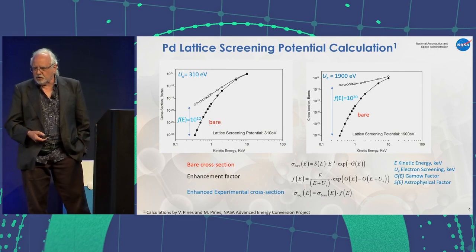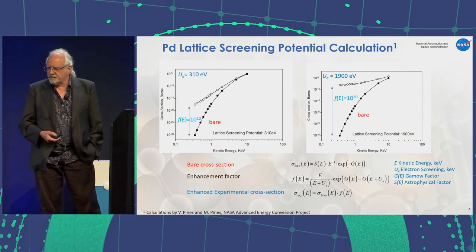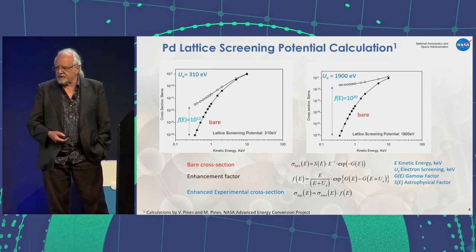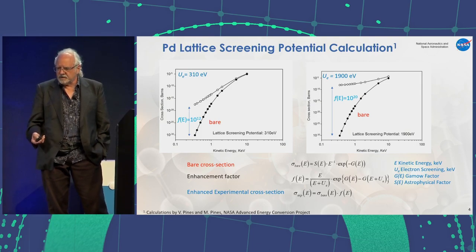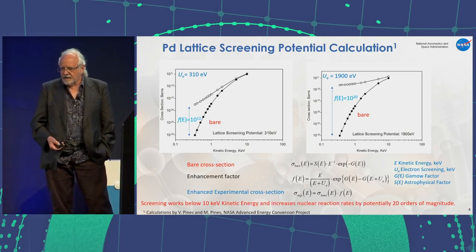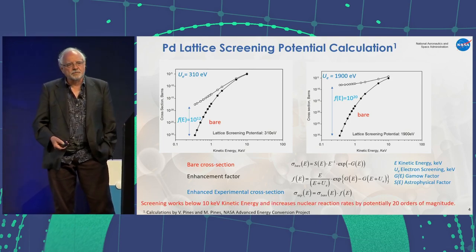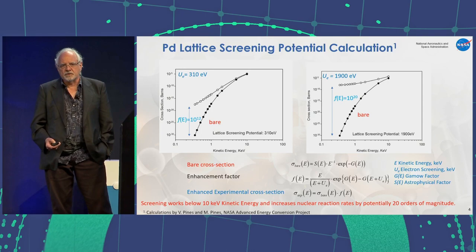Some of the equations for this: the bare cross-section where E is the kinetic energy and U sub E is the electron screening, both in keV. We then calculate an enhancement factor given both the gamma factor and the astrophysical factor, and come up with an enhanced experimental cross-section. Screening works best below 10 keV, and the nuclear reaction rates are potentially increased by 20 orders of magnitude.